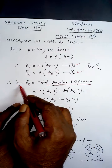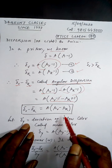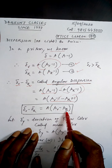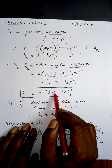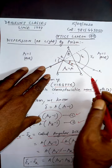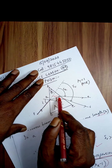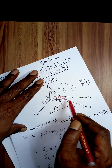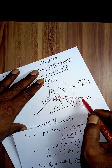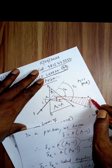Substituting the values: delta V minus delta R equals A(mu_V minus 1) minus A(mu_R minus 1). Taking A common, the 1s cancel, giving delta V minus delta R equals A(mu_V minus mu_R). This is an angle — the angular spread between violet and red. All 7 colors are arranged from violet to red: V, I, B, G, Y, O, R.